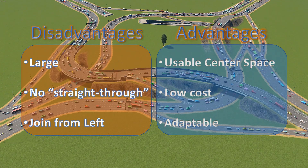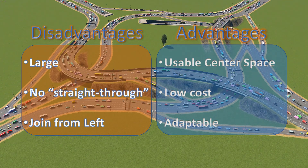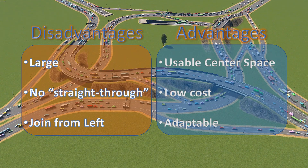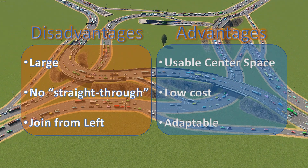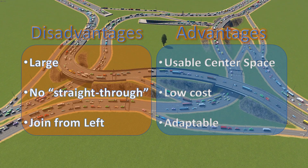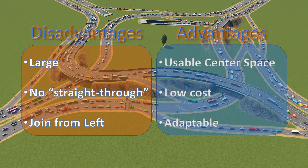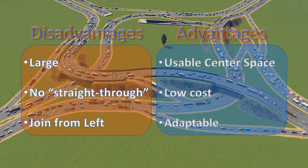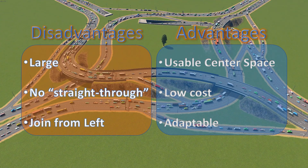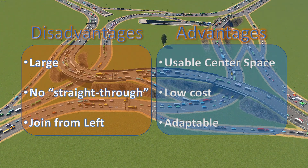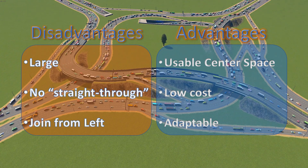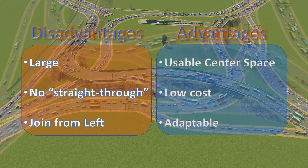Finally, on the positive side we have adaptability. Because the interchange is mostly at ground level it becomes very easy to expand or reconfigure — for example, adding a lane to improve traffic flow in one direction becomes much easier. This design also adapts well to different terrain; we can swap which highway goes over or under bridges and we can also change the tunnels if needed.